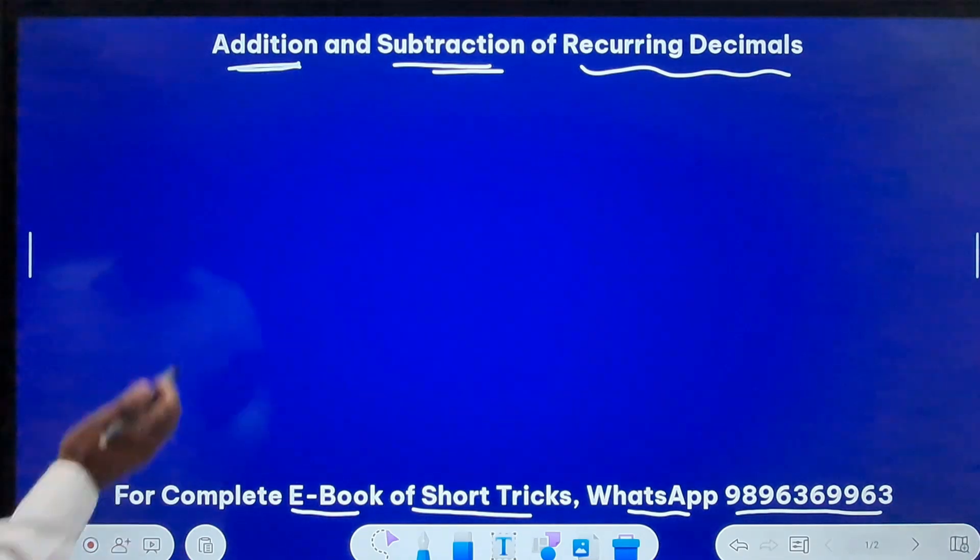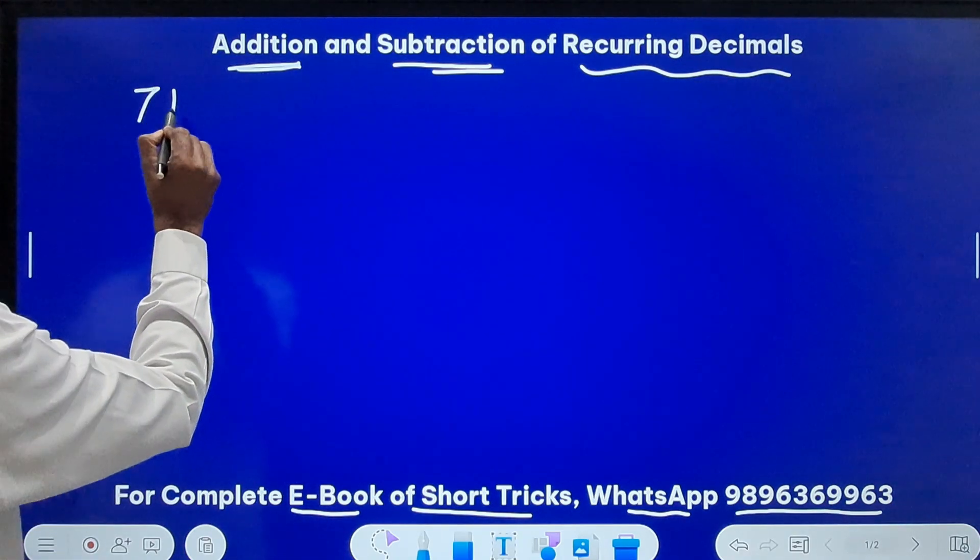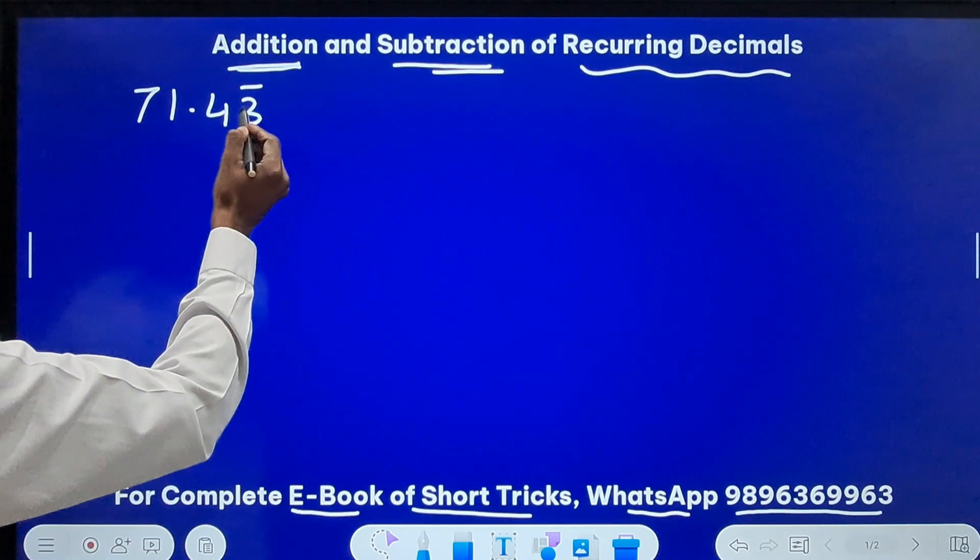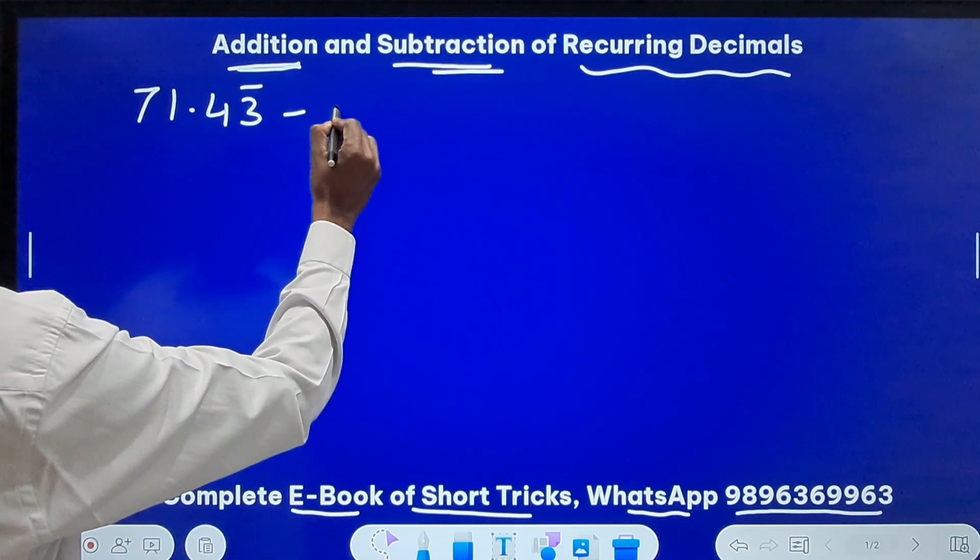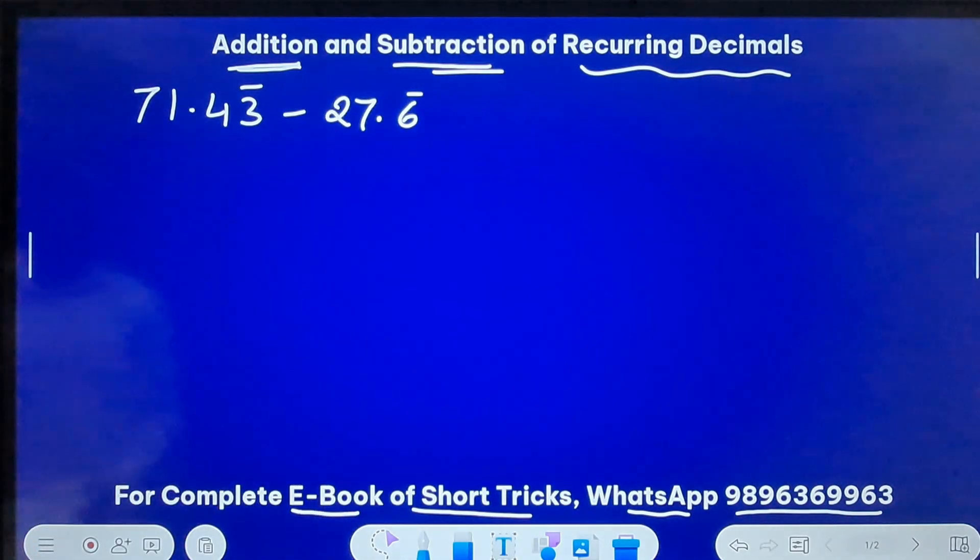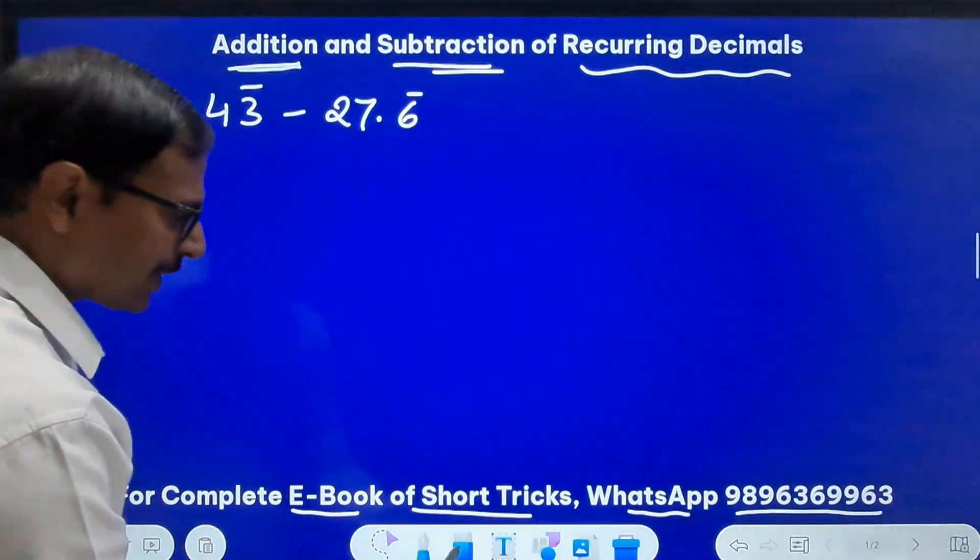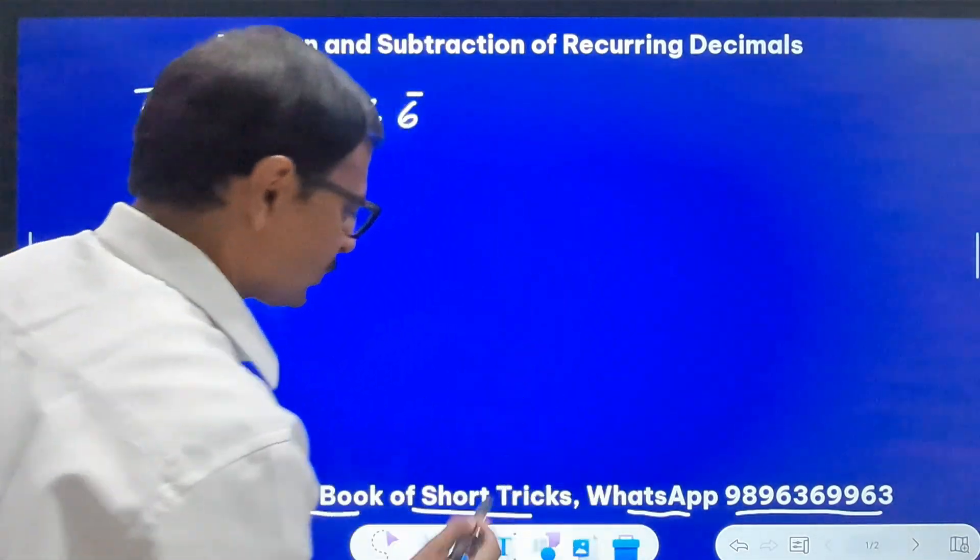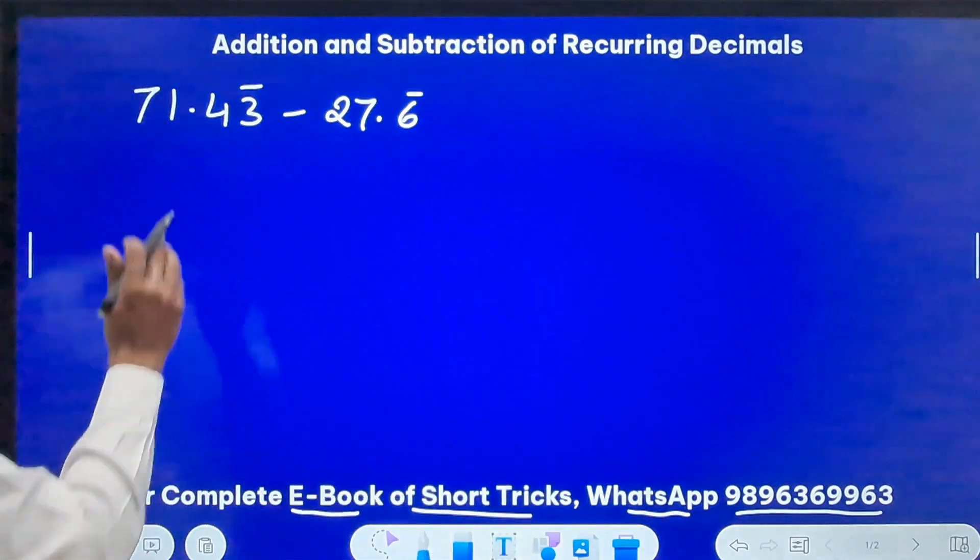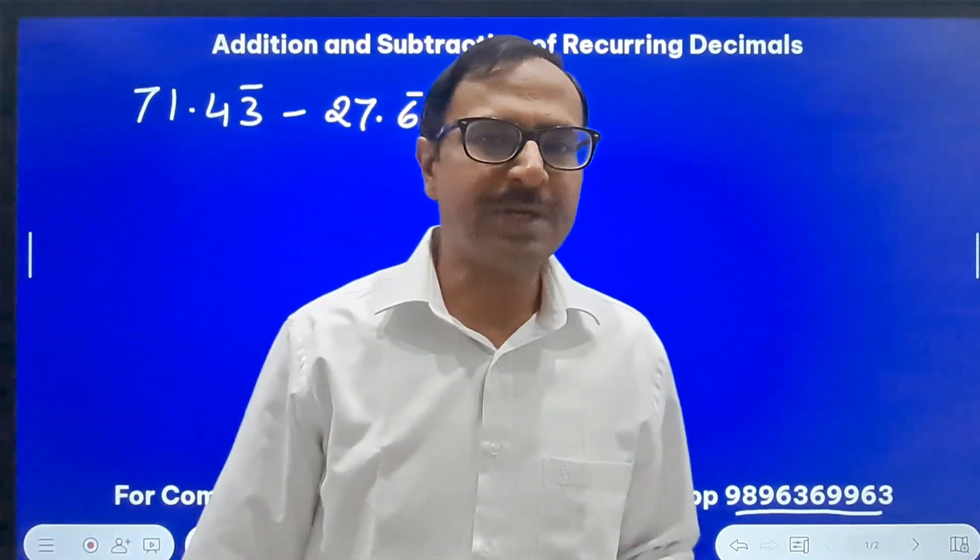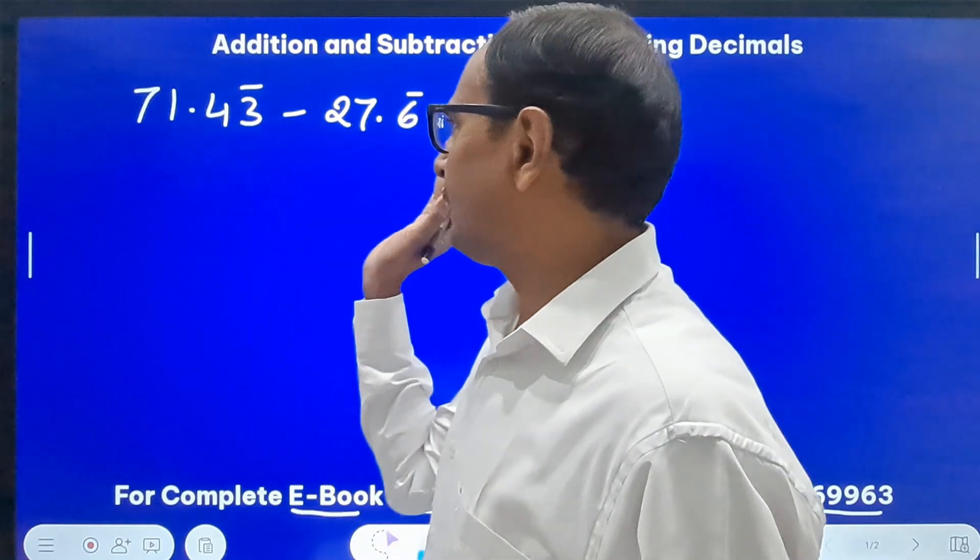So what is the first question I'm going to take up? 71.43 with a bar over 3, so 3 is repeating here, and I want to subtract 27.6 with a bar. Now how do you subtract these numbers? So I'll just get rid of these lines so that you don't get confused. This is the subtraction problem which I want to do now.